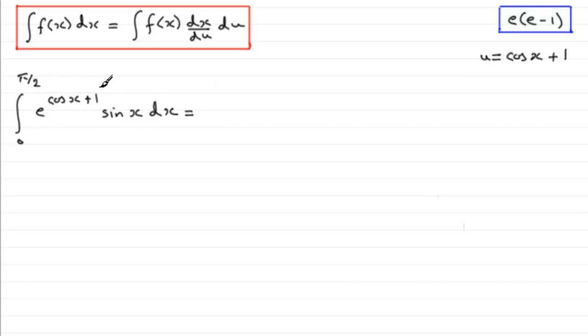This is going to be equal to the integral of f(x). So if we just copy f(x) down again, we've got e to the power cos x plus 1 multiplied by sine x. That's f(x).